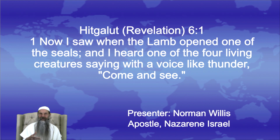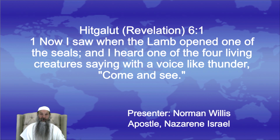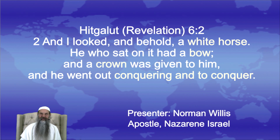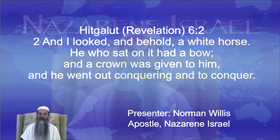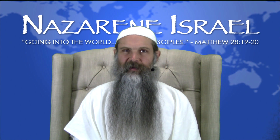In Revelation 6:1 it says, 'Now I saw when the Lamb opened one of the seals, and I heard one of the four living creatures saying with a voice like thunder, Come and see. And I looked, and behold, a white horse. He who sat on it had a bow, and a crown was given to him, and he went out conquering and to conquer.'